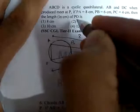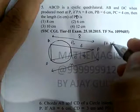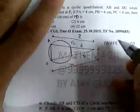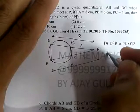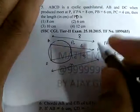The rule is: PA into PB is equal to PC into PD. Two secants from an external point — so PA into PB is equal to PC into PD. PA is 8, PB is 6, PC is 4, PD — let us say — is x.